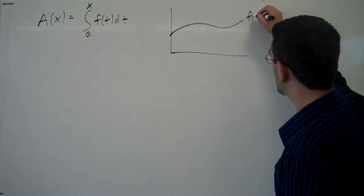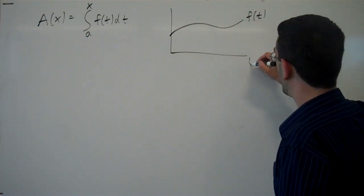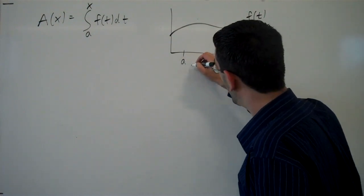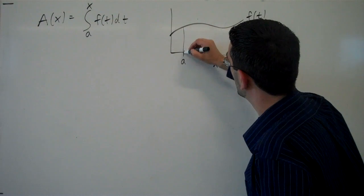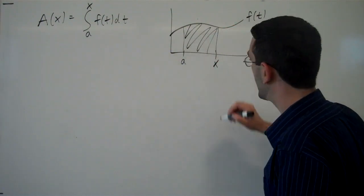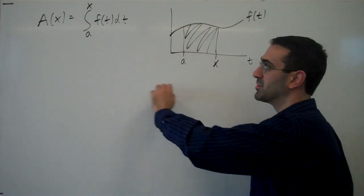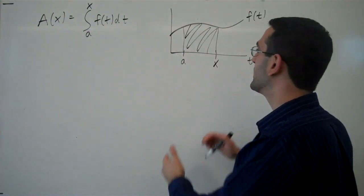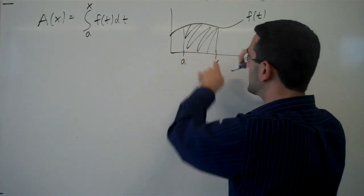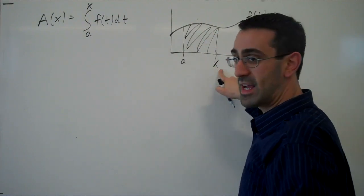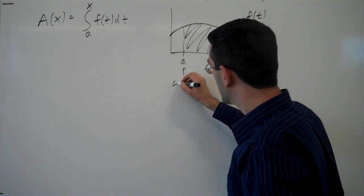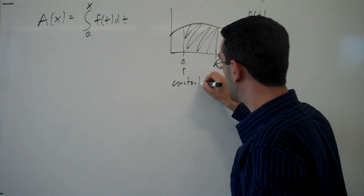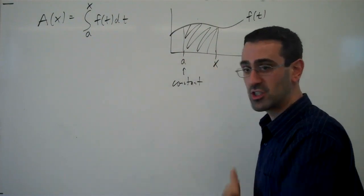In other words, we're imagining that we have a function f(t), and from a to x, we're finding the area, except x is a variable. So this A(x) function is the cumulative area, the area under this function from a to x, where a is a constant, it's fixed, but the x is allowed to change.